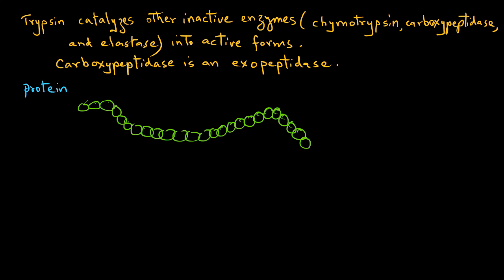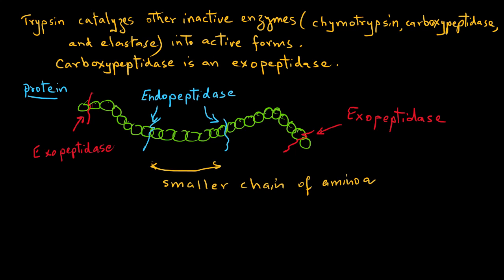Here we have this chain, and this chain is broken down by exopeptidase and endopeptidase. Exopeptidases act only to break the end amino acids, whereas endopeptidases break down the chain in the middle to make smaller chains of peptides. The peptides are mainly digested in jejunum and ileum.